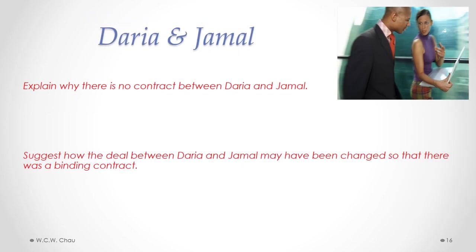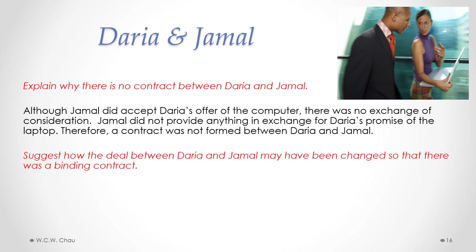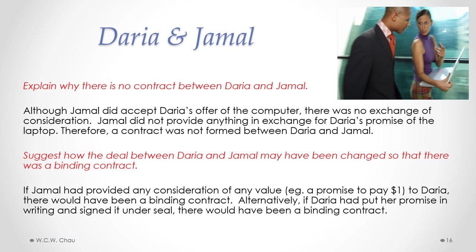In our scenario, the first question: explain why there is no contract between Daria and Jamal. Although Jamal did accept Daria's offer of the computer — so there was offer and acceptance, and therefore an agreement — there was no exchange of consideration. Jamal did not provide anything in exchange for Daria's promise of the laptop, therefore a contract was not formed. The second question: suggest how the deal may have been changed so there was a binding contract. If Jamal had provided any consideration of any value — even a promise to pay one dollar — there would have been a binding contract. Or alternatively, if Daria had put her promise in writing and signed it under seal, there would have been a binding contract.